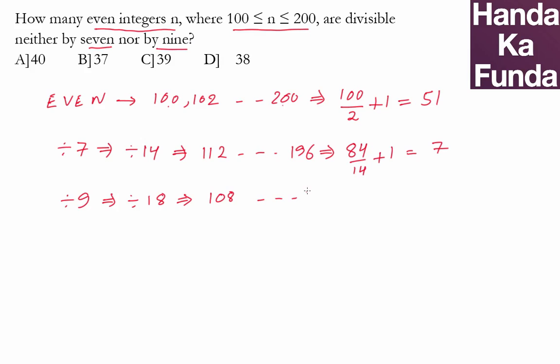Now how many are these? 198 minus 108 is 90 by the common difference, which is 18, plus 1. That gives me 5 plus 1 or 6. So I do not like these 6 numbers also.